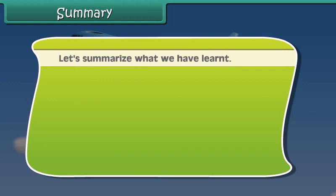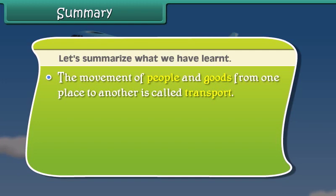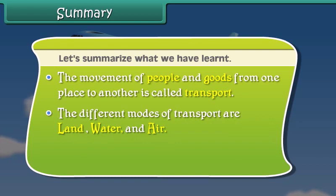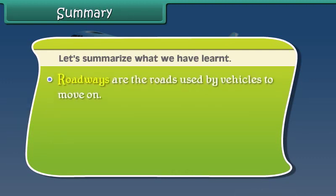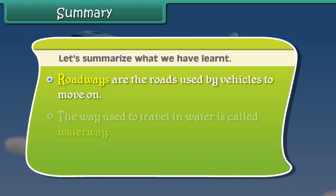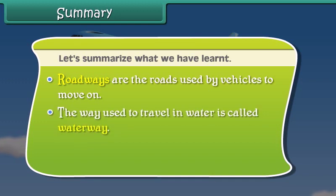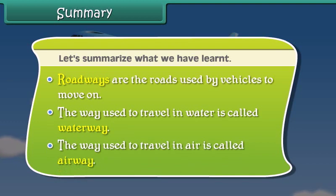Now friends, let's summarize what we have learned. The movement of people and goods from one place to another is called transport. The different modes of transport are land, water and air. Railways are the road tracks over which trains run with the help of wheels. Roadways are the roads used by vehicles to move on. The way used to travel in water is called waterway, and the way used to travel in air is called airway.